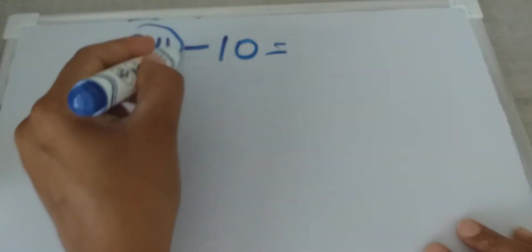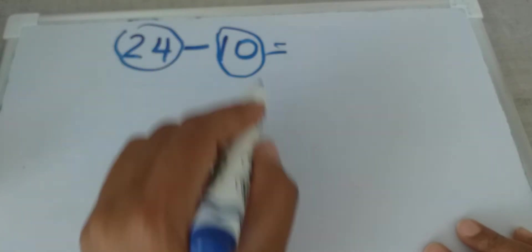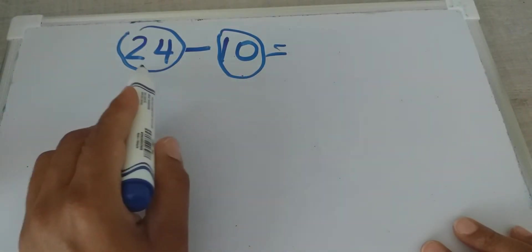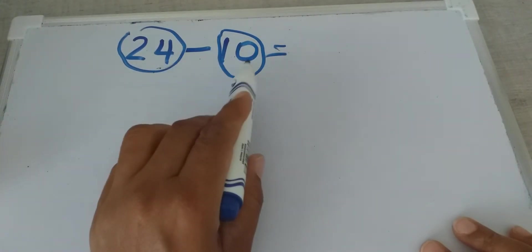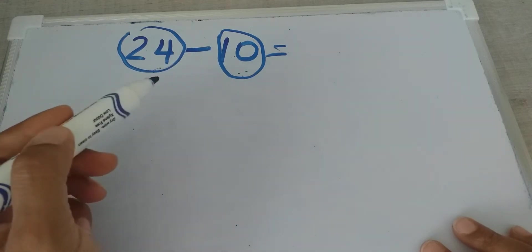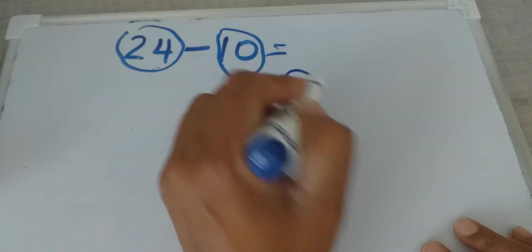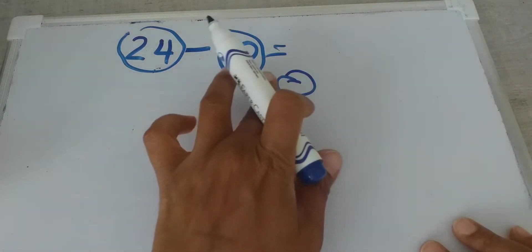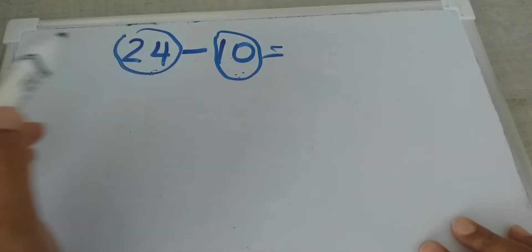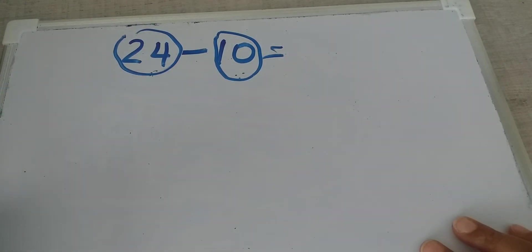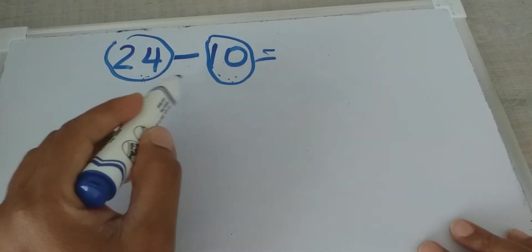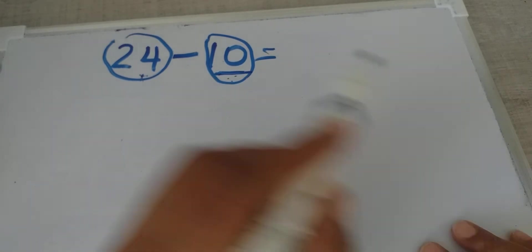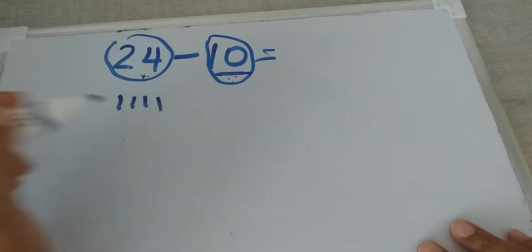From a big number you subtract a small number. You cannot say 10 minus 24 — you cannot subtract from the smaller number. That is called negative, but we haven't learned that yet. The correct way is 24 minus 10. Now, how many numbers do you need to add to get 24?